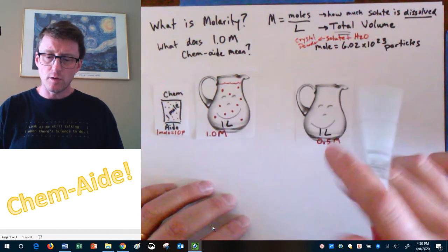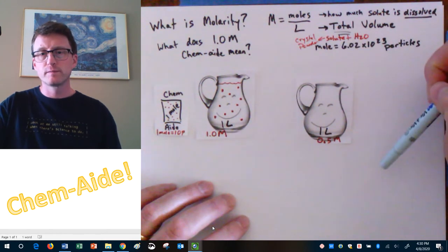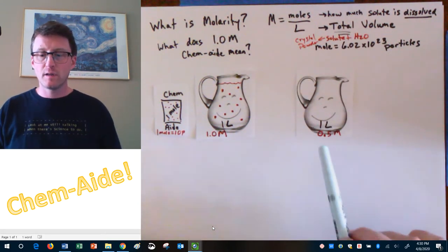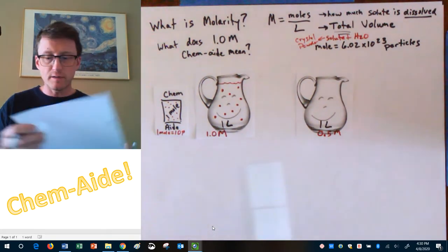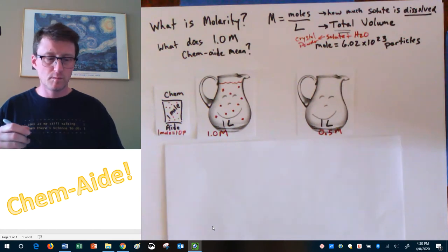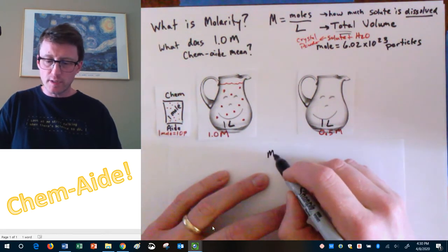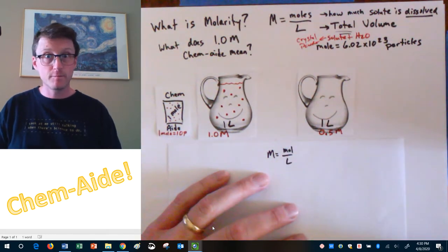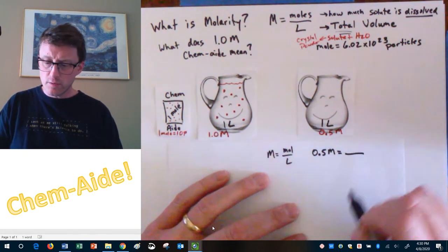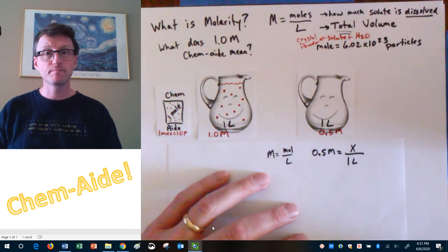Go back to your equation. If you have the same volume, but you have half the concentration, what that is telling you is you're going to take your equation and say, I know my equation is molarity equals moles over liters. My molarity here is 0.5 molar, and I know the volume is one liter. What do I do? Well, this becomes your X.